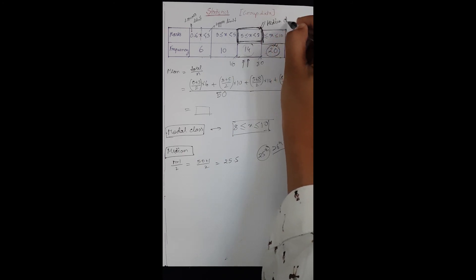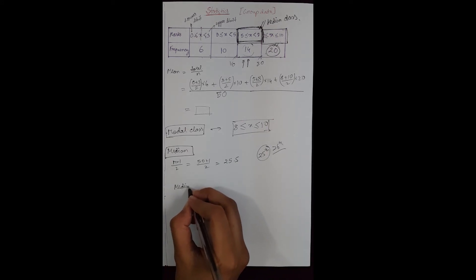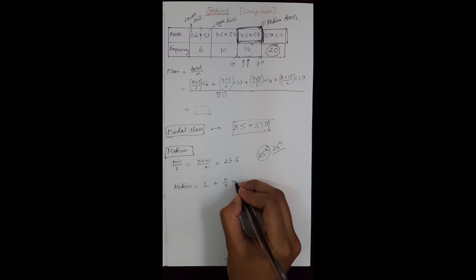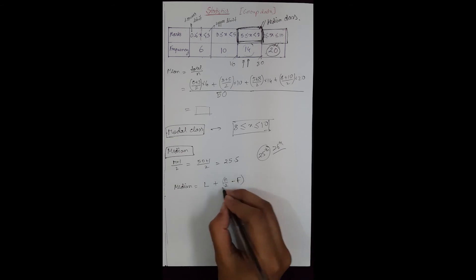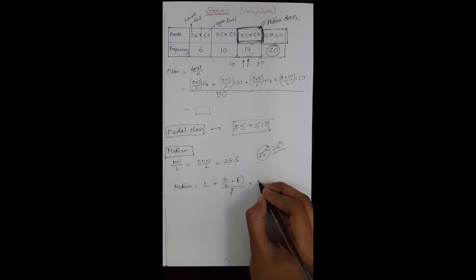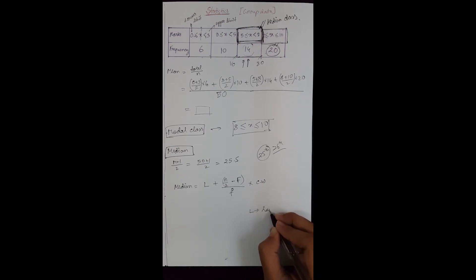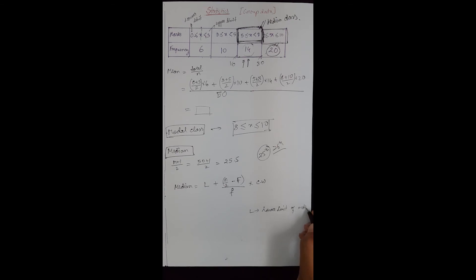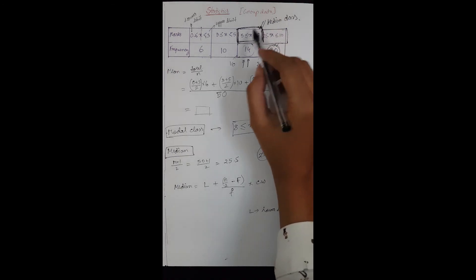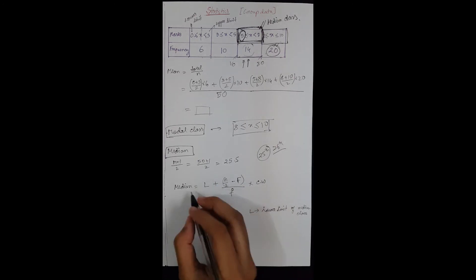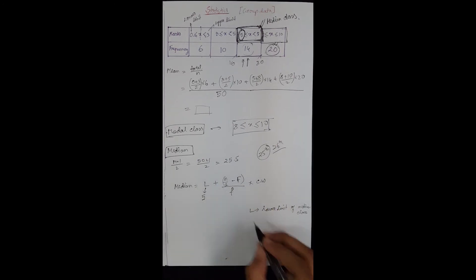After identifying the median class, we apply the formula: Median = L + (N/2 − F) / f × CW. Here L is the lower limit of the median class. Our median class is 5 to 8, so L equals 5.